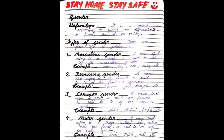Third is common gender. A noun that refers to either a male or female is said to be of the common gender. This gender tells us about either male or female. Examples: child, student, people, etc.